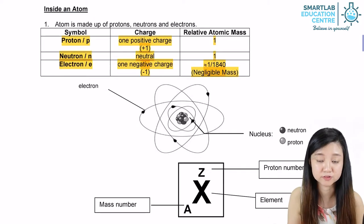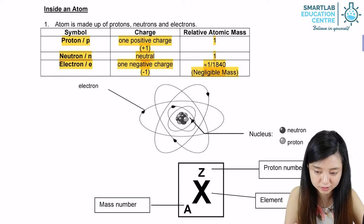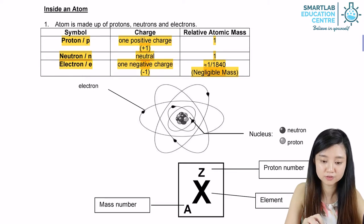For neutrons, they have neutral charge, meaning they don't have a charge, and they have a relative atomic mass of 1 as well.